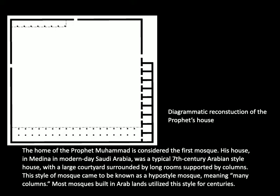What you see on the screen here is a diagrammatic reconstruction of the Prophet Muhammad's house. This was his house in Medina, which is located in modern-day Saudi Arabia. The layout of the house is typical of a 7th century Arabian style house. Often these houses have a large courtyard, and surrounding the courtyard are long rooms supported by columns.